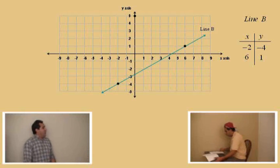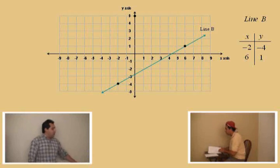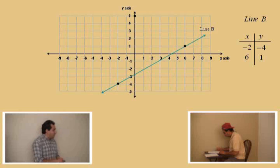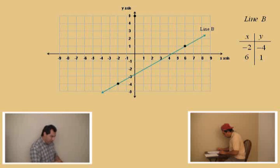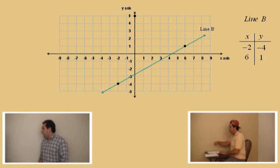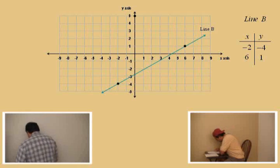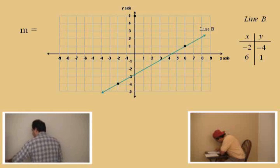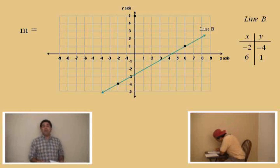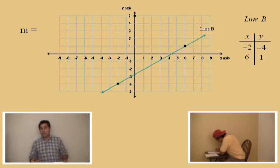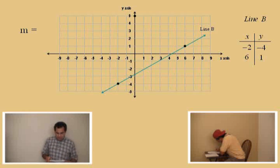Here we go again, Charlie. Let's see if you remember — what is the variable we use for slope? Is it a, b, c, or what is it? M. That's right. And remember, slope is the rise over the run, or the change of y over the change of x.